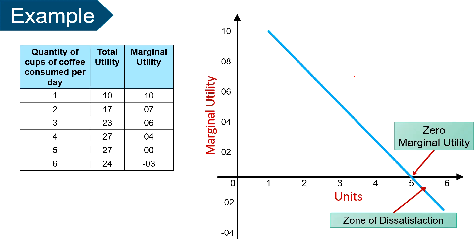Now for marginal utility: when the consumer consumes two cups of coffee, his total utility increases from 10 utils to 17 utils, meaning the second cup added 7 utils. Hence the marginal utility of the second cup is 7 utils. As the consumer increases consumption, total utility goes on increasing until the fourth cup, after which total utility starts declining and marginal utility becomes negative, implying that consuming more than four cups would give him displeasure. On consuming the fifth cup the marginal utility is zero, and when the consumer consumes the sixth cup the zone of dissatisfaction is reached.